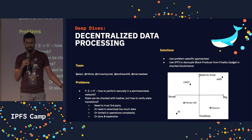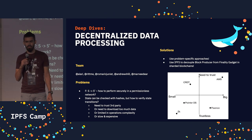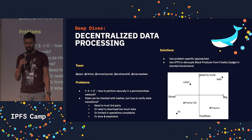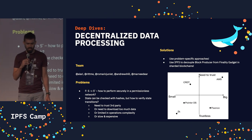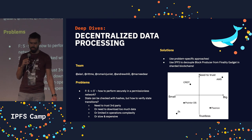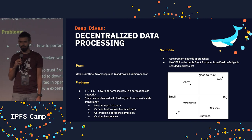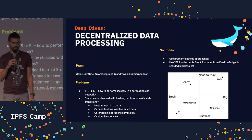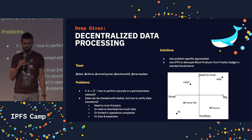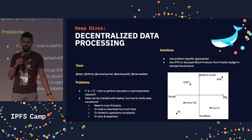State itself can be checked with a hash, like it's done in IPFS, but how do you verify the transition? There is a list of various solutions, each with their own limitations.